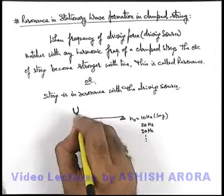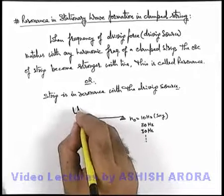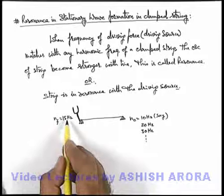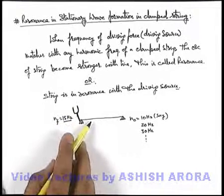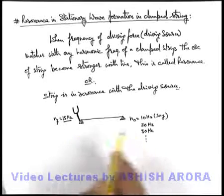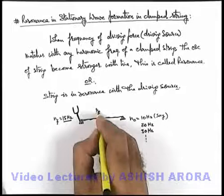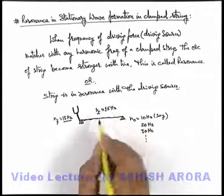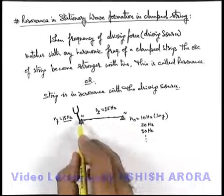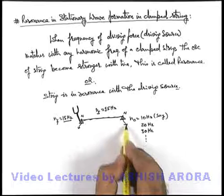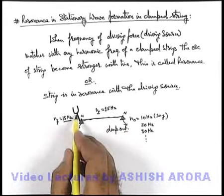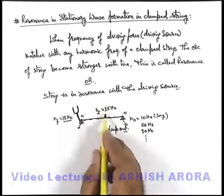If we bring a tuning fork and it is brought in contact with the clamped string, and the tuning fork has a frequency of 15 Hz — this is not matching. The driving source is supplying energy of oscillations to the string, but its frequency does not match any of the harmonics. The string will oscillate at 15 Hz, but at that frequency the wavelength produced cannot form stationary waves with nodes at the clamps. So whatever energy the driving source supplies will damp out at the clamps, and as soon as you remove the tuning fork the string will come to rest and the oscillations will damp.